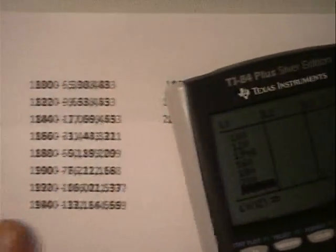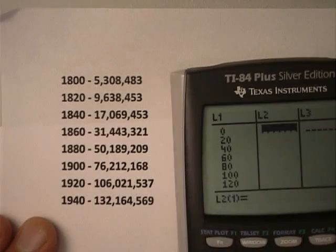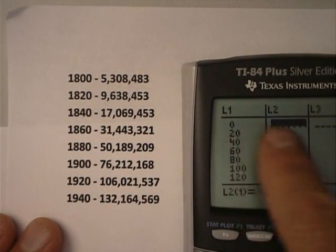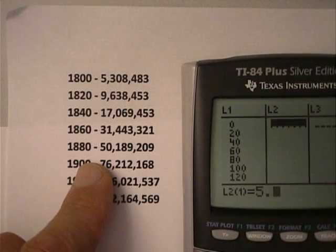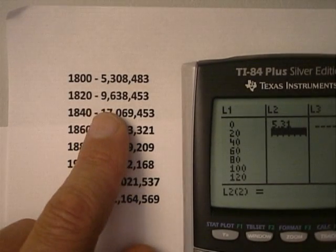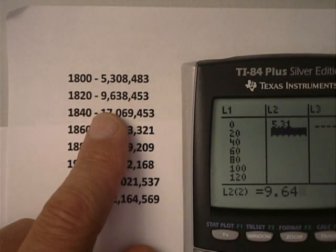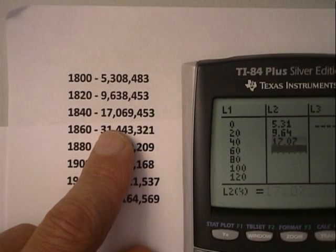I've got the input values done. I go over to the next one, L2, all the way back up. Got to make sure I'm across from zero. And I can start with 5.3. 5.31, I'll do two decimal places here. 9.64, 17.07 and so on.